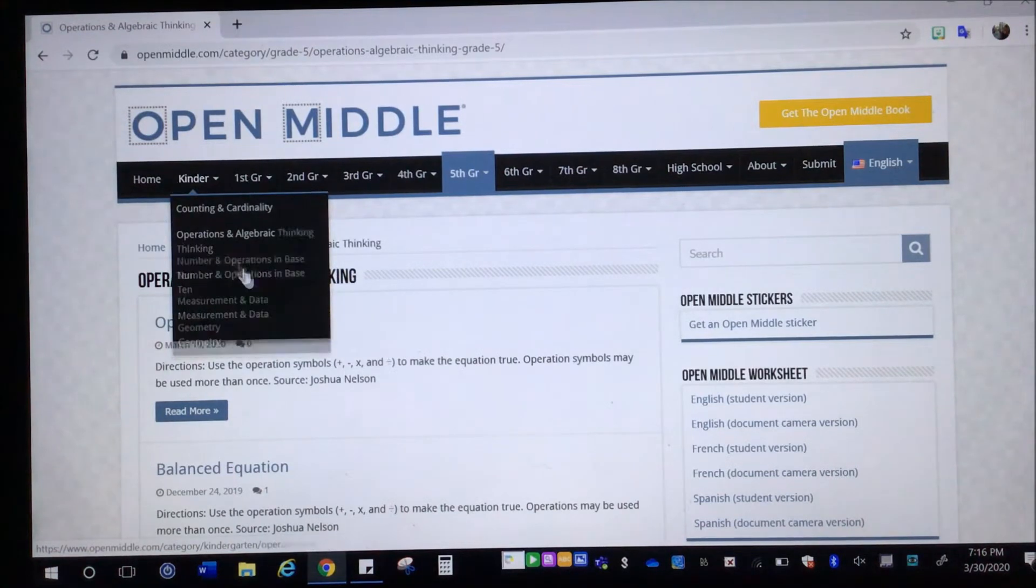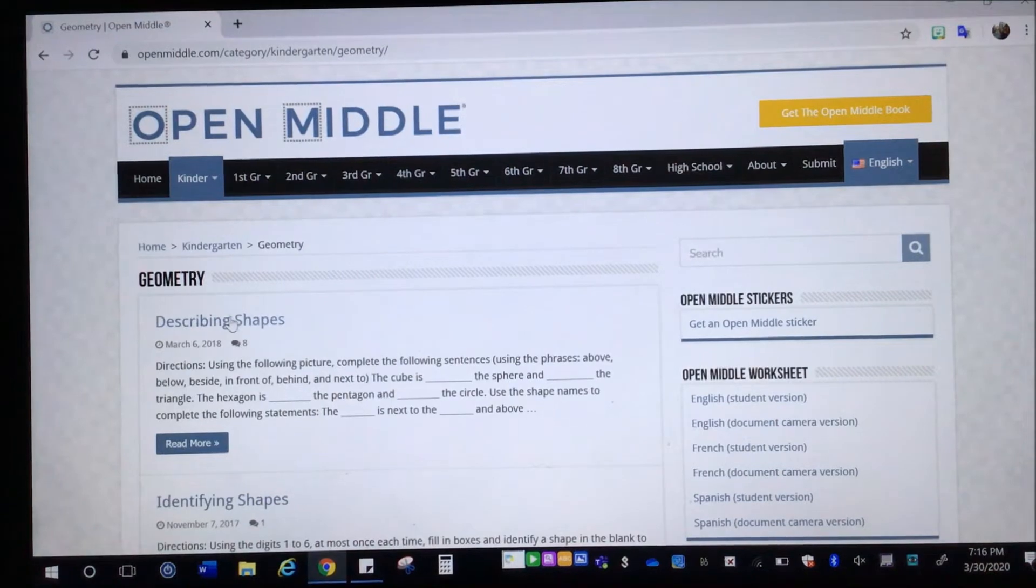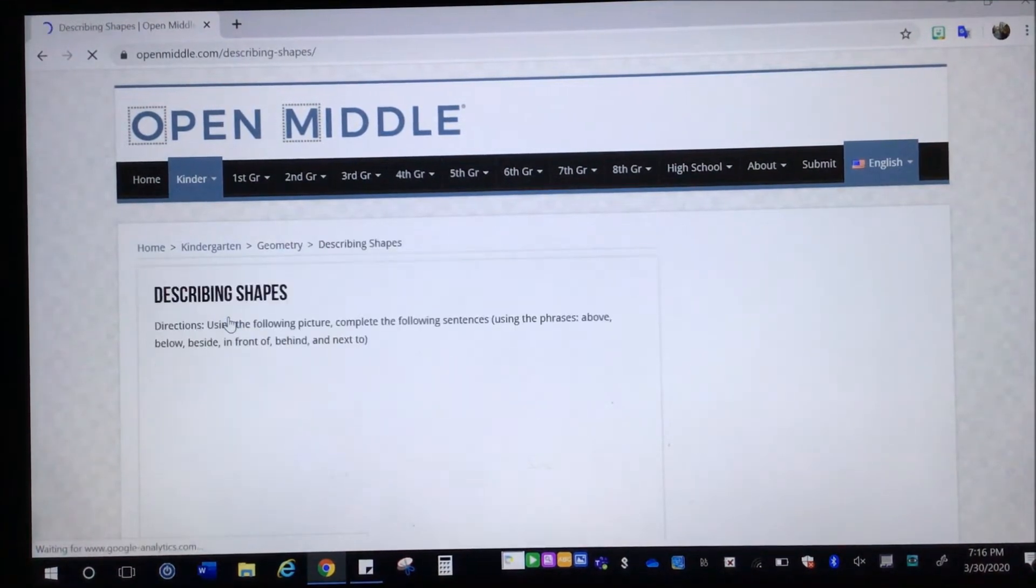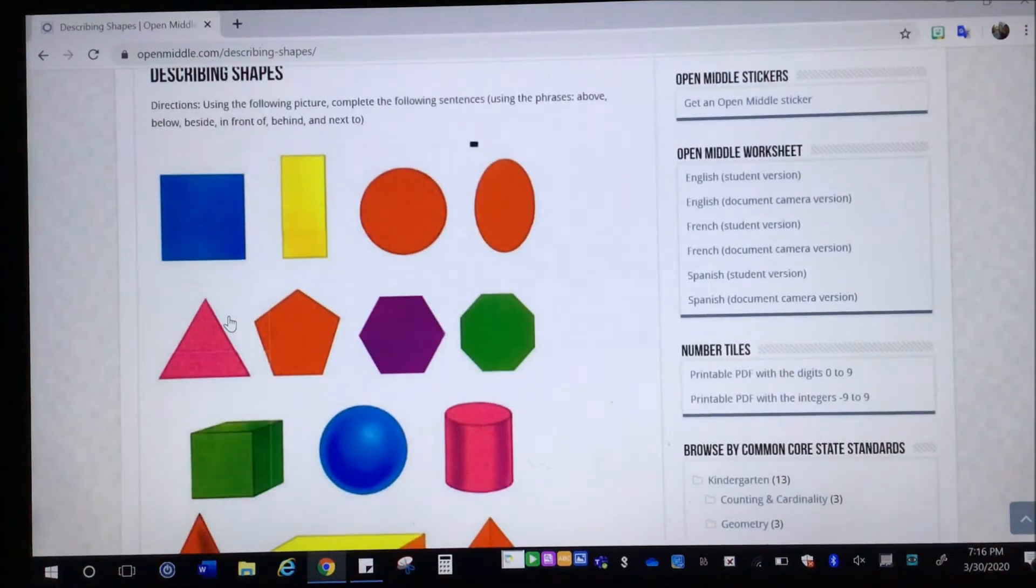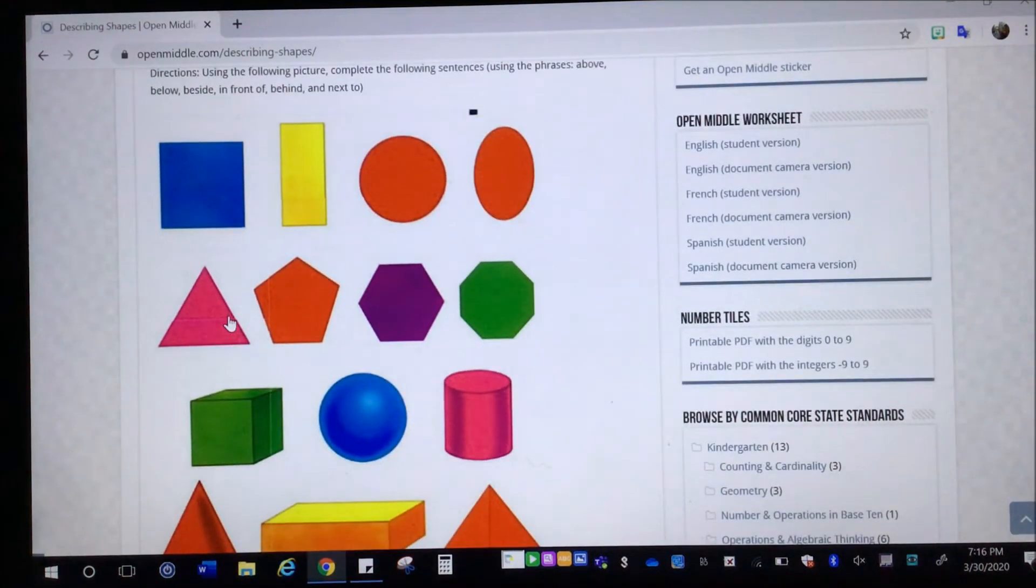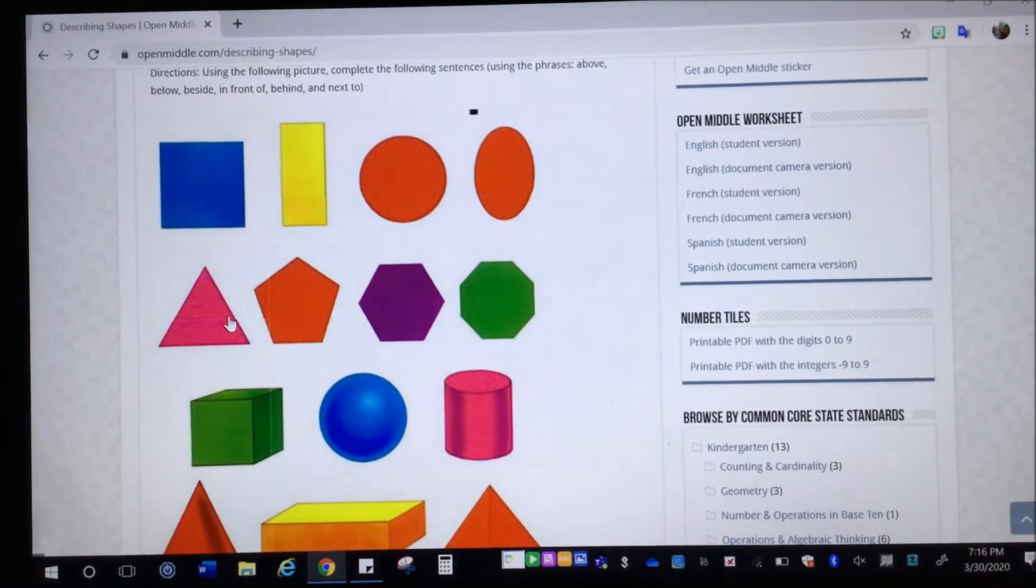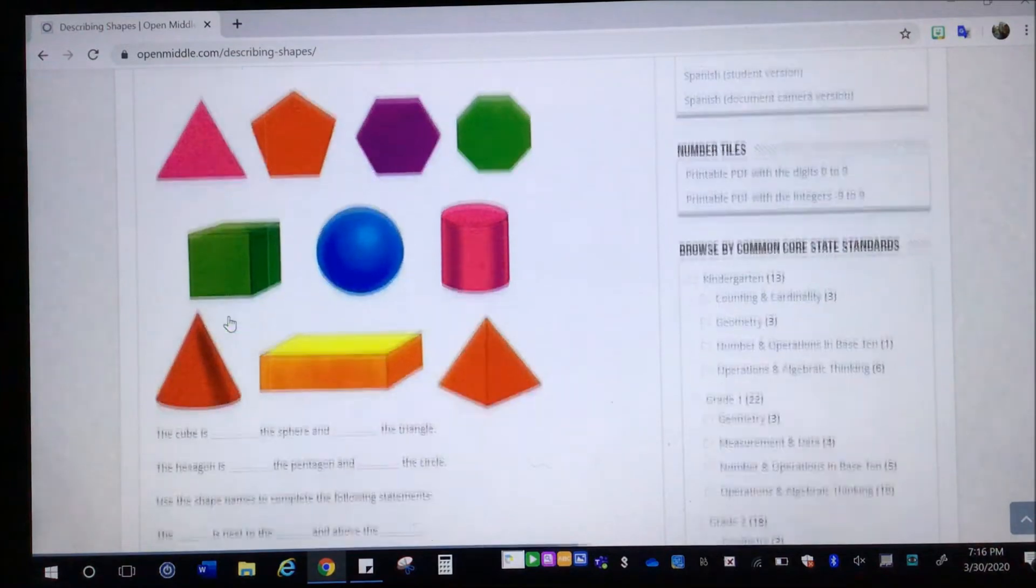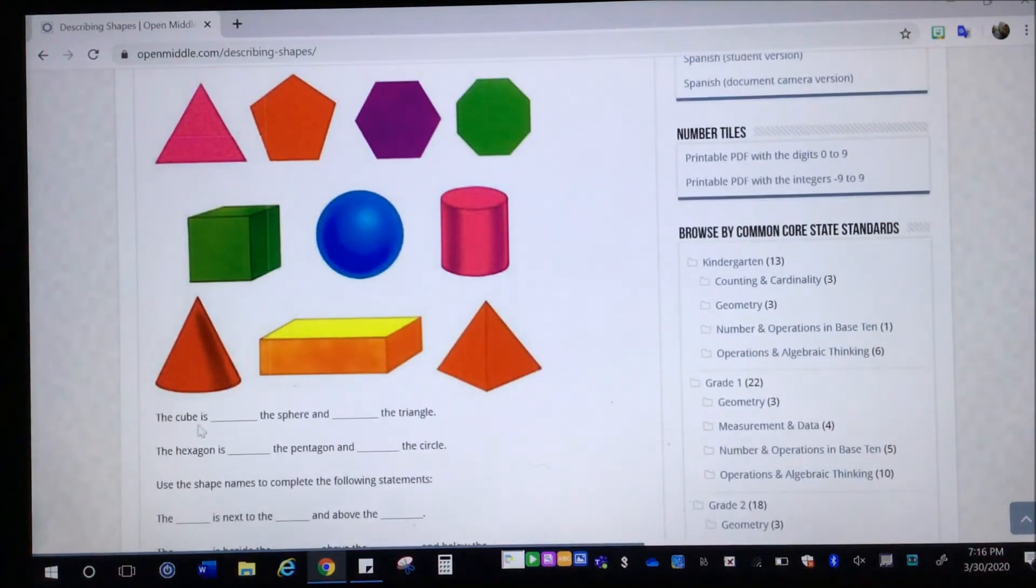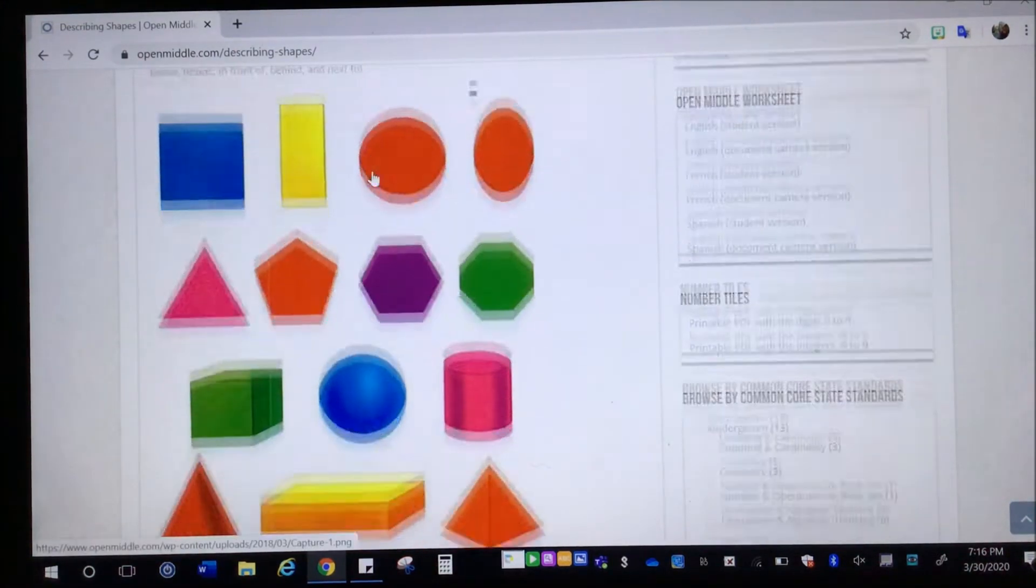So if I go to kindergarten, go to geometry, let's see describing shape. So I click on that. Let's see. Use the following picture, complete the following sentences using the phrases above, below, beside, in front of, behind, and next to. So it gives you these pictures. And then it gives you these sentence starters. The cube is blank the sphere and blank the triangle. So you have to use some of these phrases to make that complete.